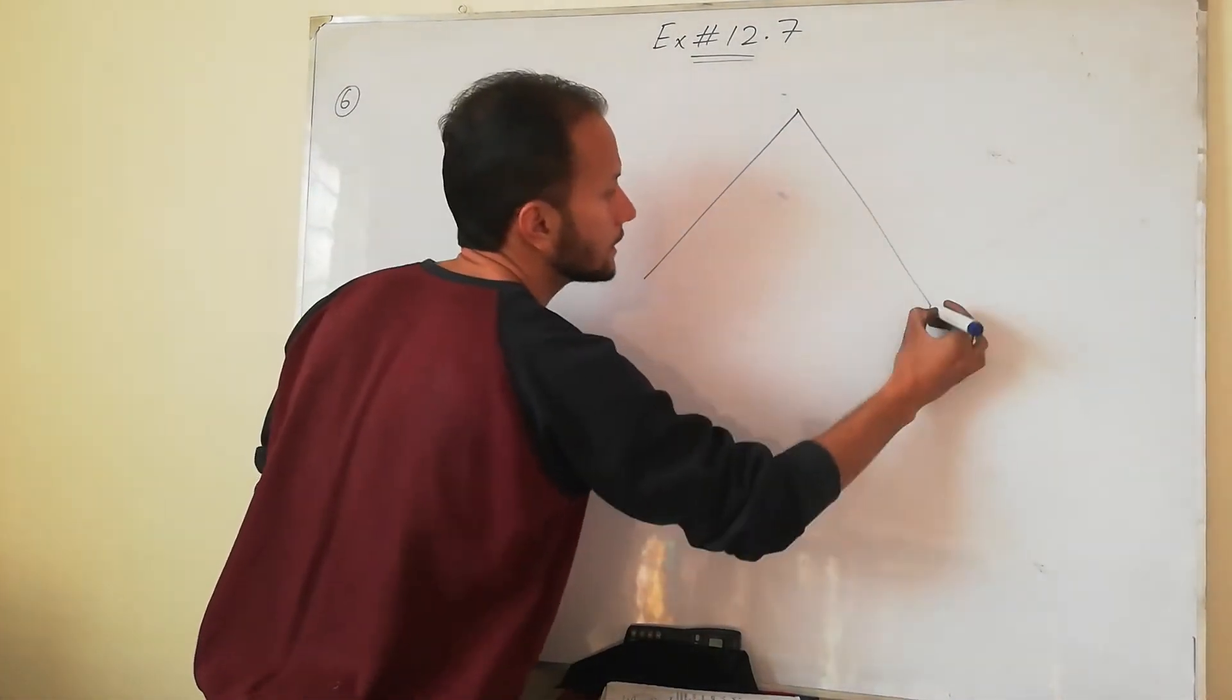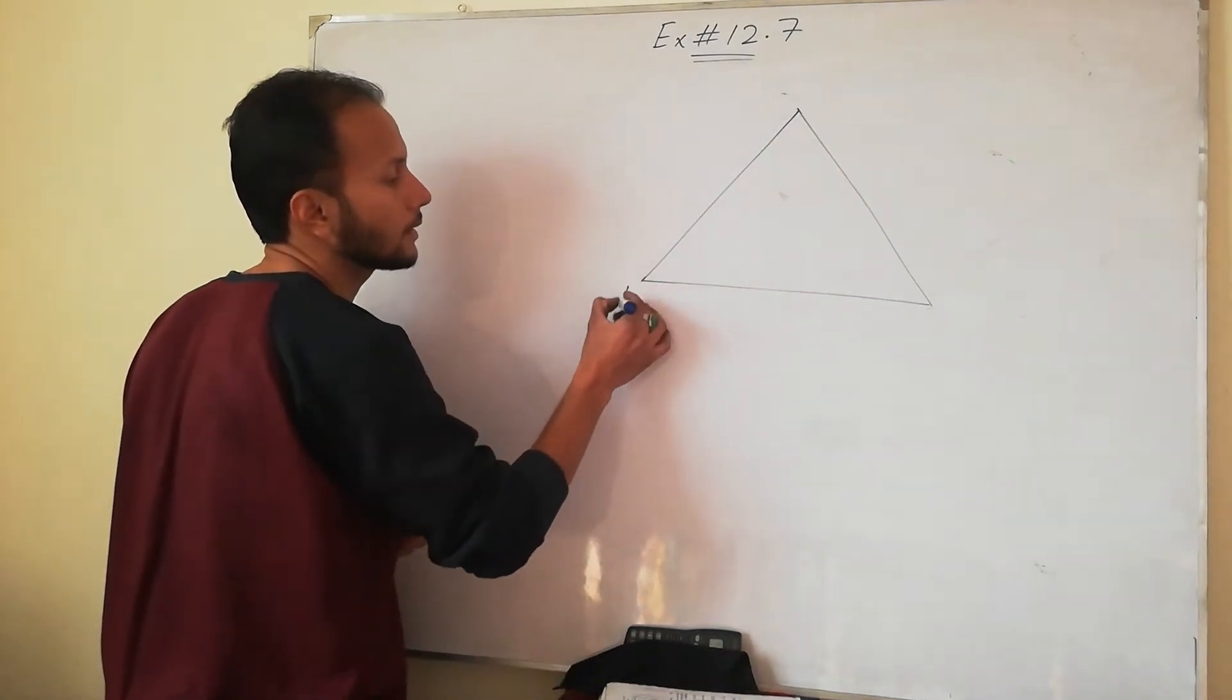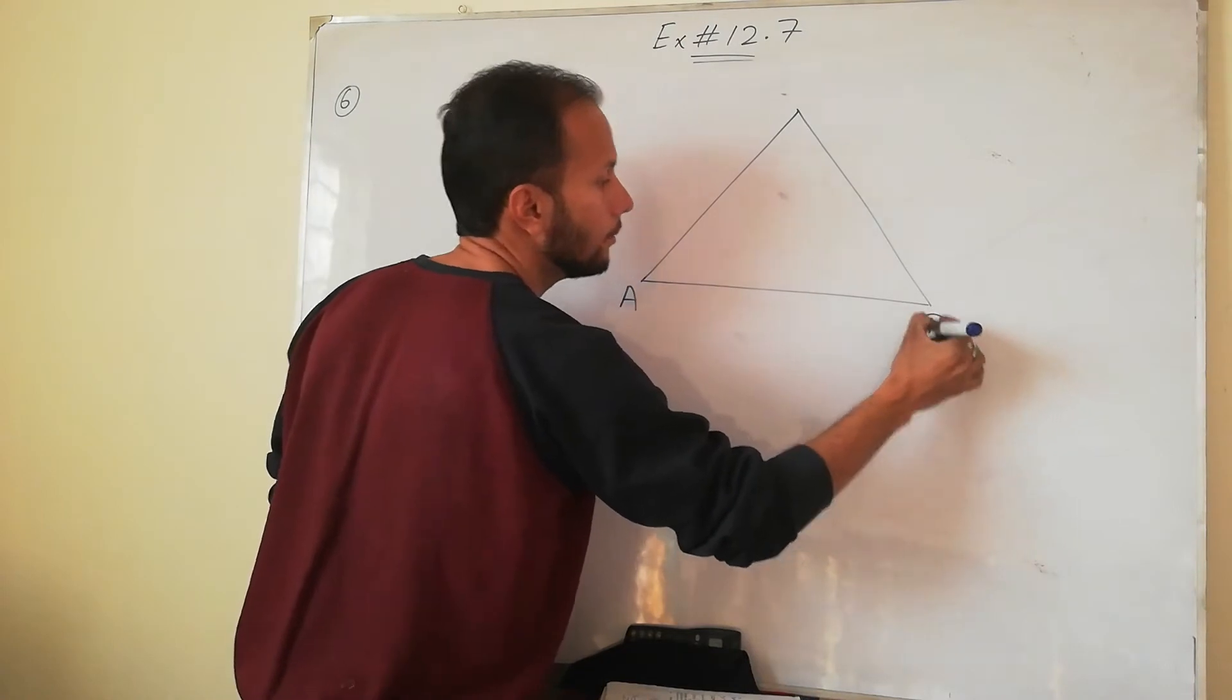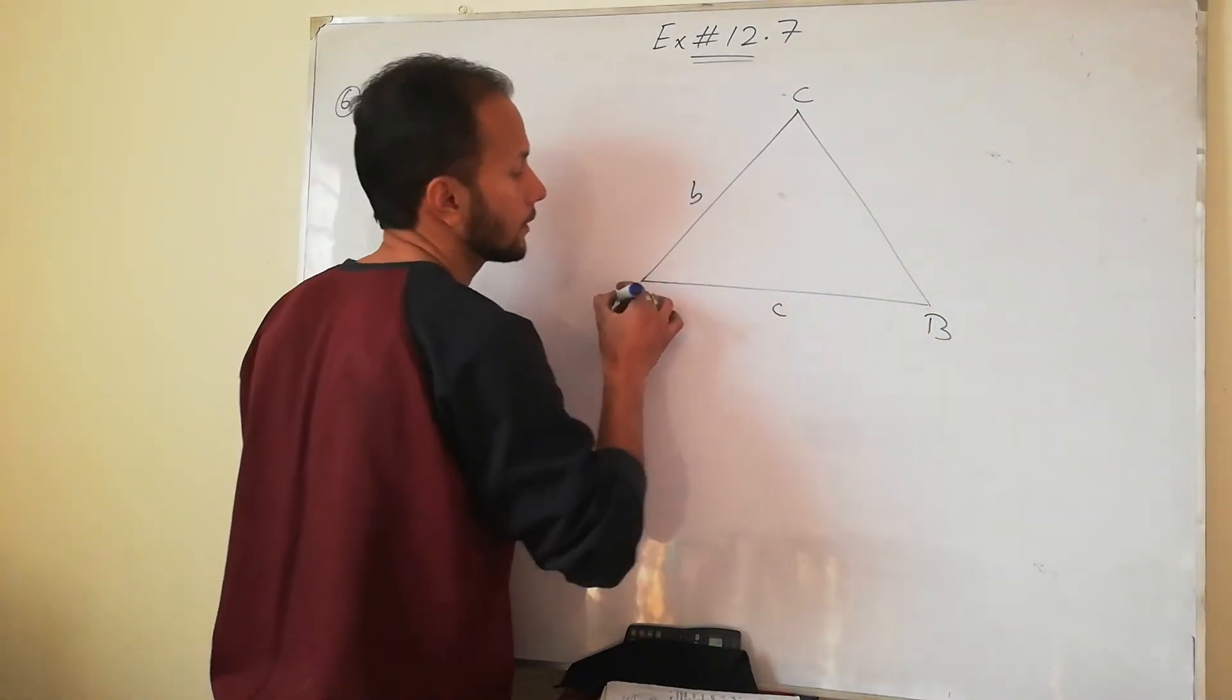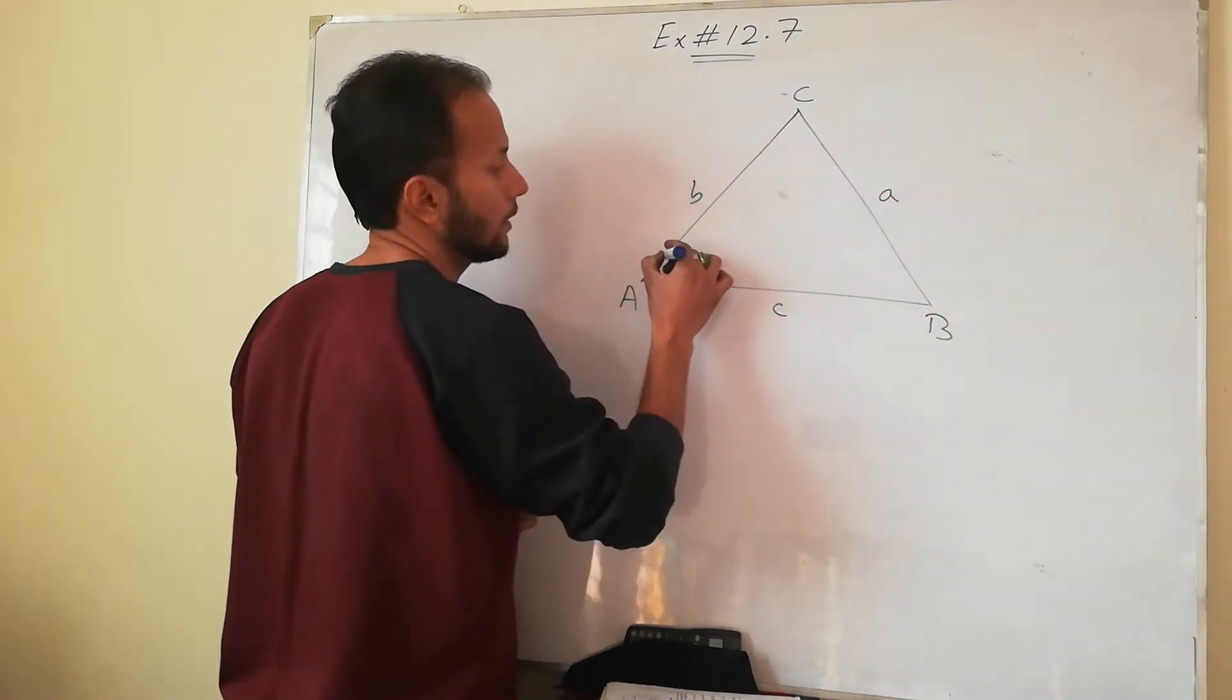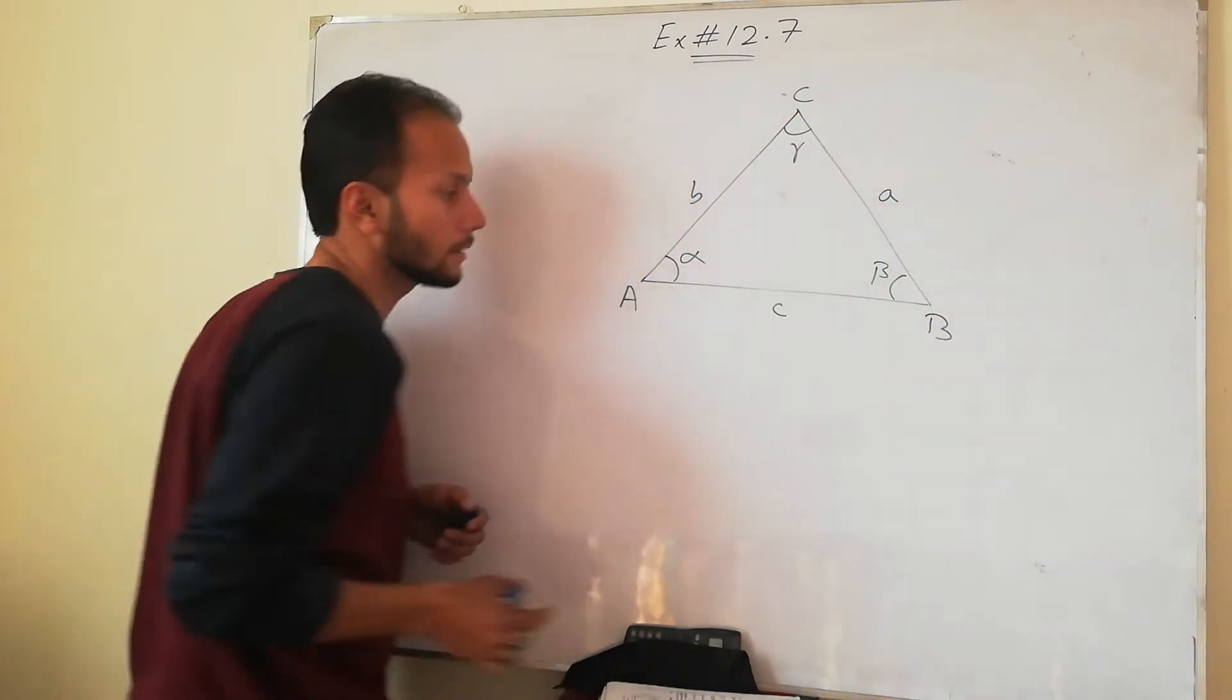First we will make a figure. Then we will make A, B, C and alpha, beta. So we will label it A, B, C and C, B and A. So we will make an angle of alpha, beta and gamma. Let's label it here.